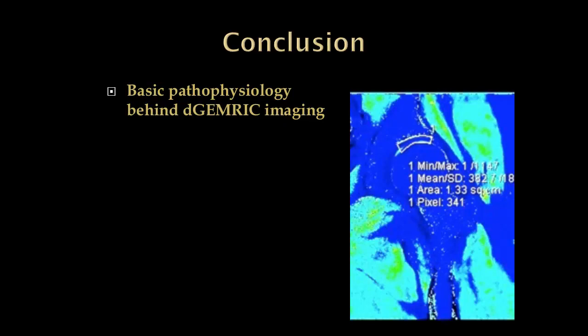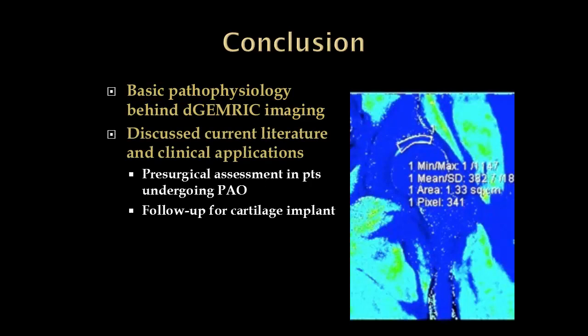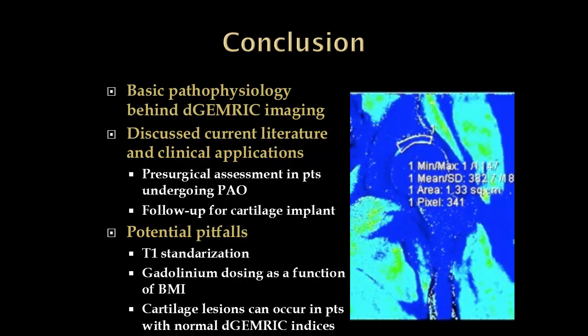In conclusion, we've talked about the pathophysiology behind dGEMRIC imaging, the current literature, and current applications — namely pre-surgical assessment in patients undergoing periacetabular osteotomy, and follow-up in patients who have undergone cartilage implants — as the two most widely researched and accepted clinical applications. Potential pitfalls include T1 standardization, gadolinium dosing, and cartilage lesions occurring in patients with normal dGEMRIC indices. I hope this gives you a general idea of what dGEMRIC imaging is and allows you to apply these clinical applications to your practice. Thank you.